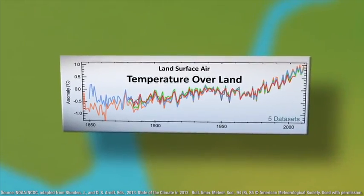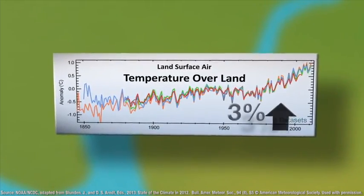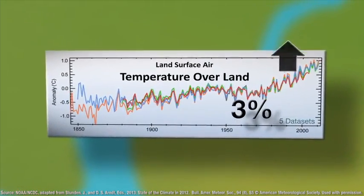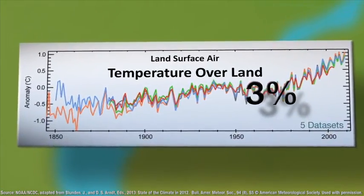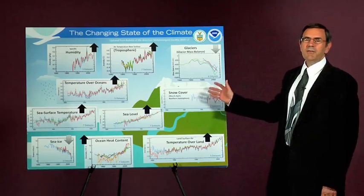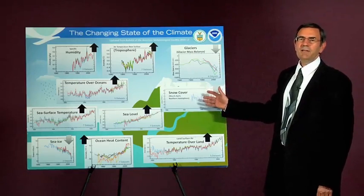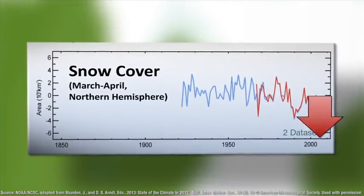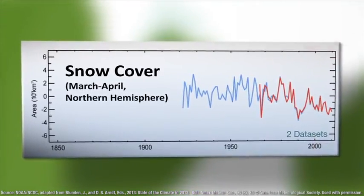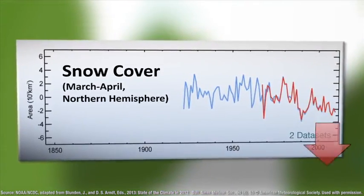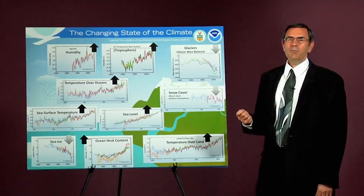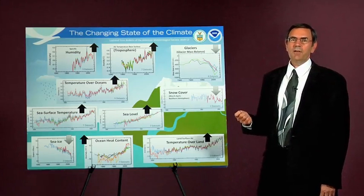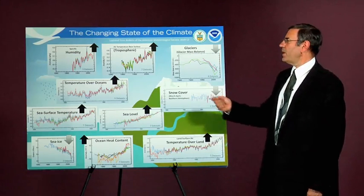Ninety-three percent of the increased heat energy over the last several decades has gone into warming the ocean temperatures. Only three percent has gone into warming the land surface temperatures. Another three percent of heat has gone into melting snow cover in the northern hemisphere, and only one percent has gone into warming the atmosphere.